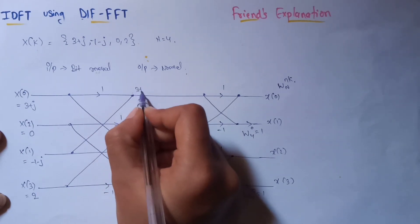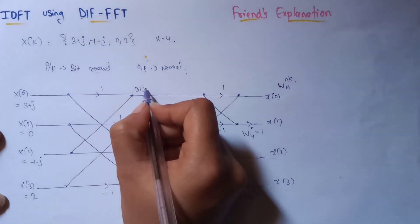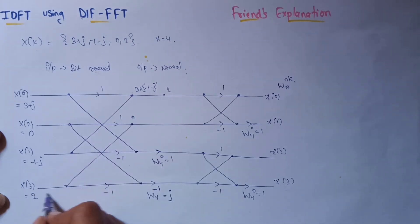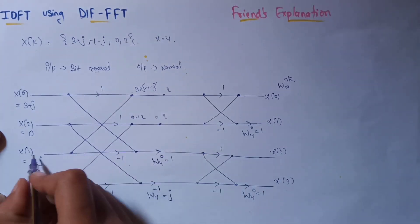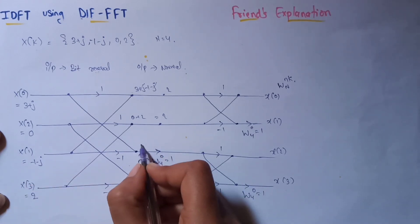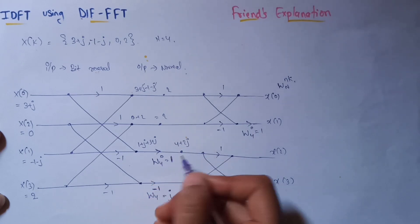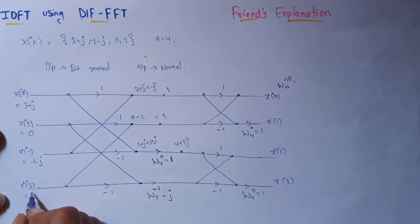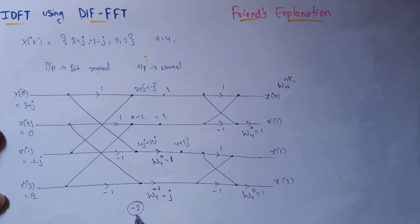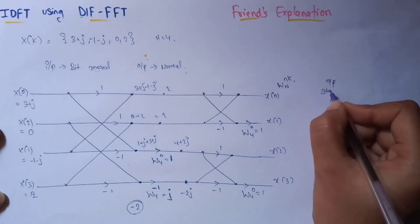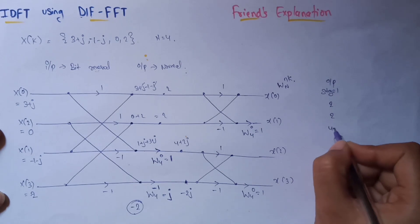For stage 1: the data 3 plus j flows up, and from below minus 1 minus j comes in, giving us 2 on the first line. On the second line we get 0, and 2 flows up giving 2. For the third line: minus 1 minus j multiplied by minus 1 gives 1 plus j, and adding 3 plus j gives 4 plus 2j. For the fourth line: 2 multiplied by minus 1 is minus 2, plus 0 is minus 2, and after multiplying by j it becomes minus 2j. So the stage 1 output is: 2, 2, 4 plus 2j, and minus 2j.